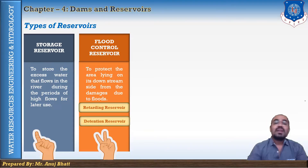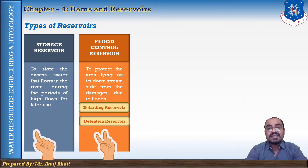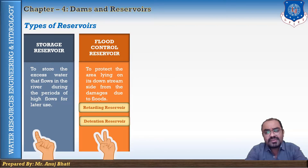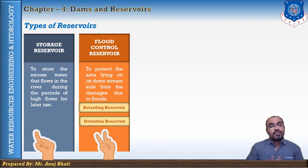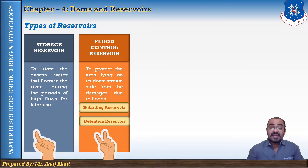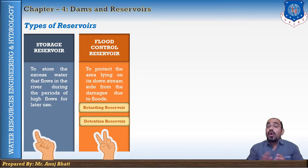The second sub-type is the detention reservoir. A detention reservoir is provided with outlets and spillways that are controlled by gates and valves. A detention reservoir stores excess water during the flood and releases it after the flood. The spillways with adjustable gates allow flood water to be detained for some time and then released according to the situation at the downstream area.